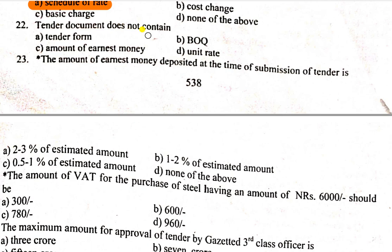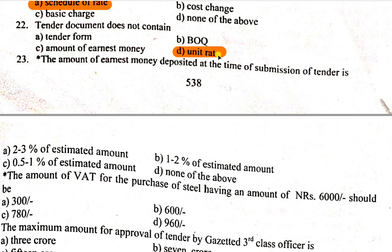In the tender document there will be: BOQ (Bill of Quantity), Amount of Earnest Money, and Unit Rate. So there is a unit rate — the unit rate will be the correct answer for what the tender document does not contain.